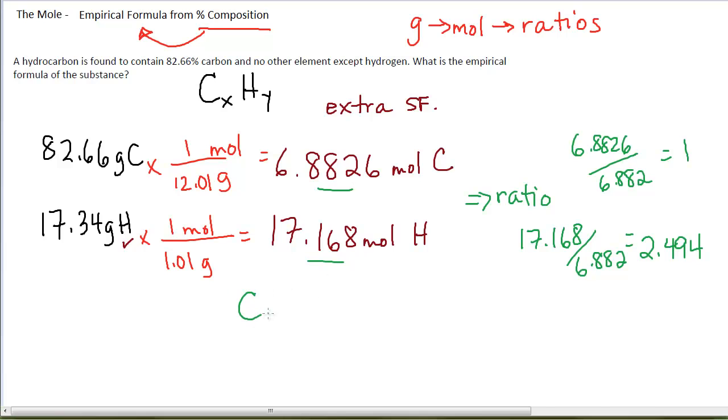I mean, literally, I have 6.8826 carbons for every 17.164 hydrogens. Those are the mole to moles that I have, the moles of each carbon and hydrogen that I have. But we don't write the formula like this. We write it with whole numbers.